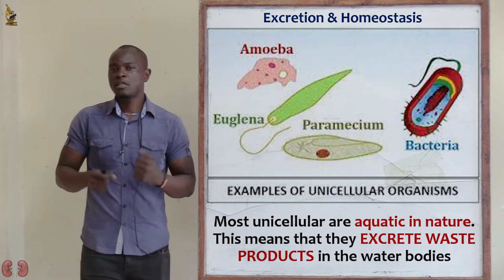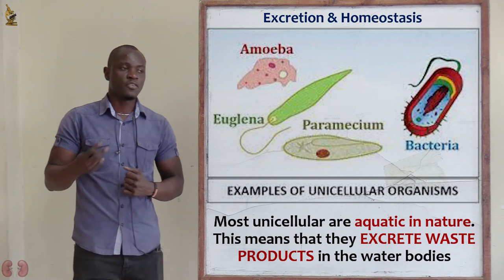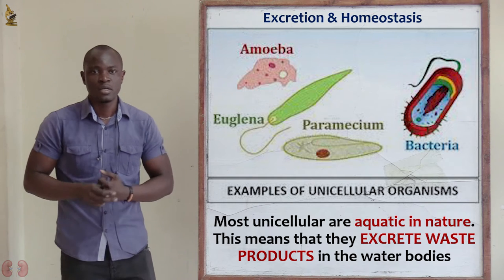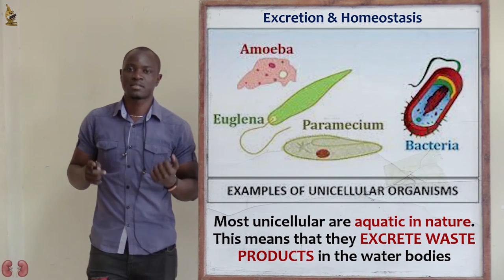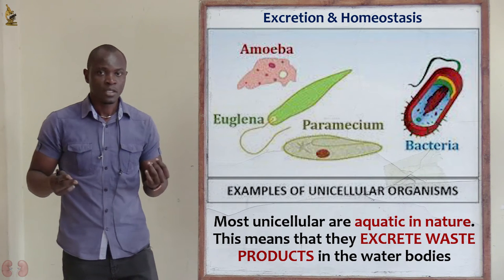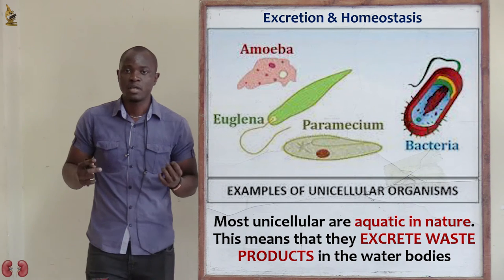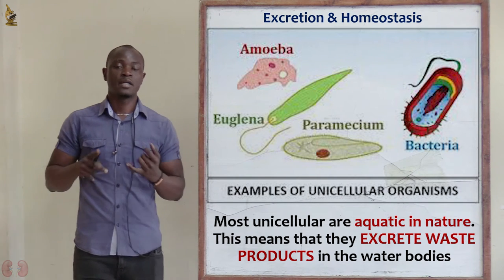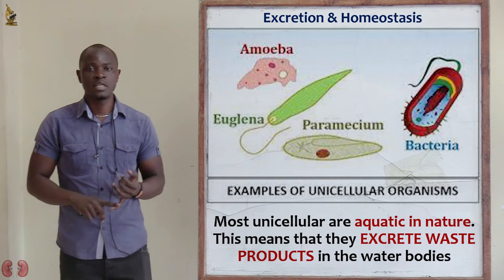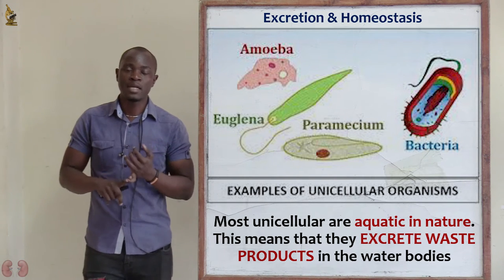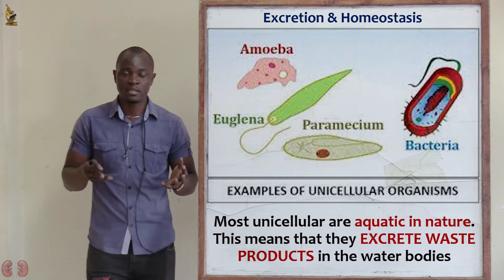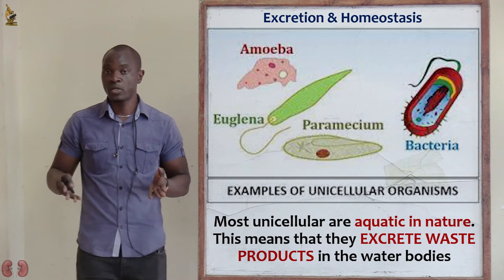Unicellular organisms produce different waste products, just like any other organism. These include carbon dioxide, nitrogenous waste, and different mineral elements that are waste in their body. They remove anything that is not useful in the body as waste.